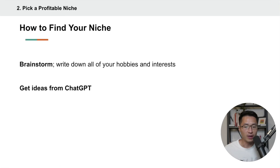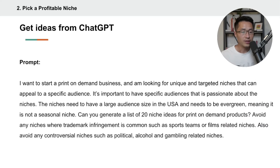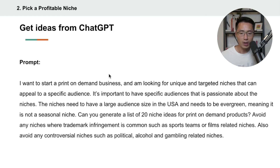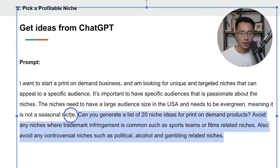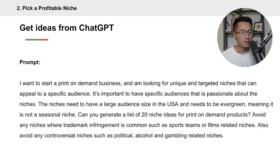To find your niche, first just brainstorm — write down all of your hobbies or interests on a piece of paper. Then you can get ideas from ChatGPT using a specific prompt. A prompt is basically the instructions you give the AI for it to come up with an answer. I'll include this prompt in a document that I'll share, with all the information from this tutorial — access link will be in the description. So just copy and paste the prompt from there.